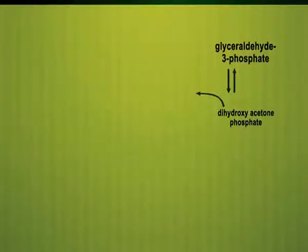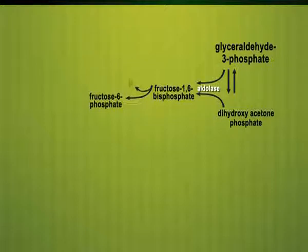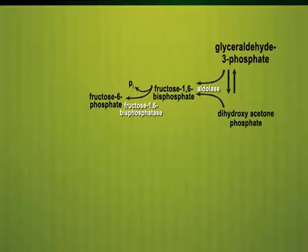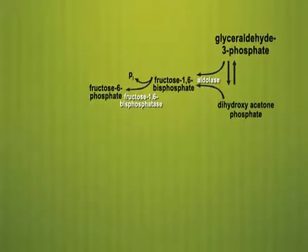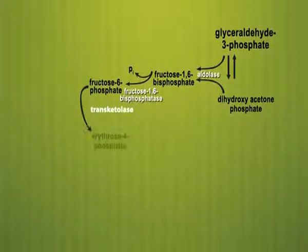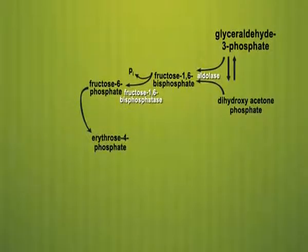One molecule of DHAP undergoes aldol condensation with a second molecule of G3P using aldolase to give fructose 1,6-bisphosphate (F1,6-BP), which is hydrolyzed to fructose 6-phosphate (F6P) by the enzyme fructose 1,6-bisphosphatase — a 6-carbon sugar. Then F6P has two carbons removed by transketolase, producing erythrose 4-phosphate (E4P).